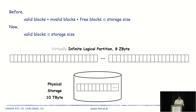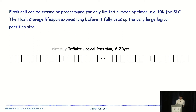The infinite logical partition does not mean that we can write valid blocks beyond the storage capacity. The file system has three types of blocks: valid, invalid, and free. In the legacy file system, the sum of their sizes is less than or equal to the size of storage. For the infinite logical partition, the size of total valid blocks should be less than or equal to the storage size. The size of our infinite logical partition is 8 zettabytes. This size is large enough to provide three logical blocks during the flash storage lifespan. Flash cells can be erased or programmed only a limited number of times, and the flash storage lifespan expires long before it fully uses up the 8 zettabyte logical partition.